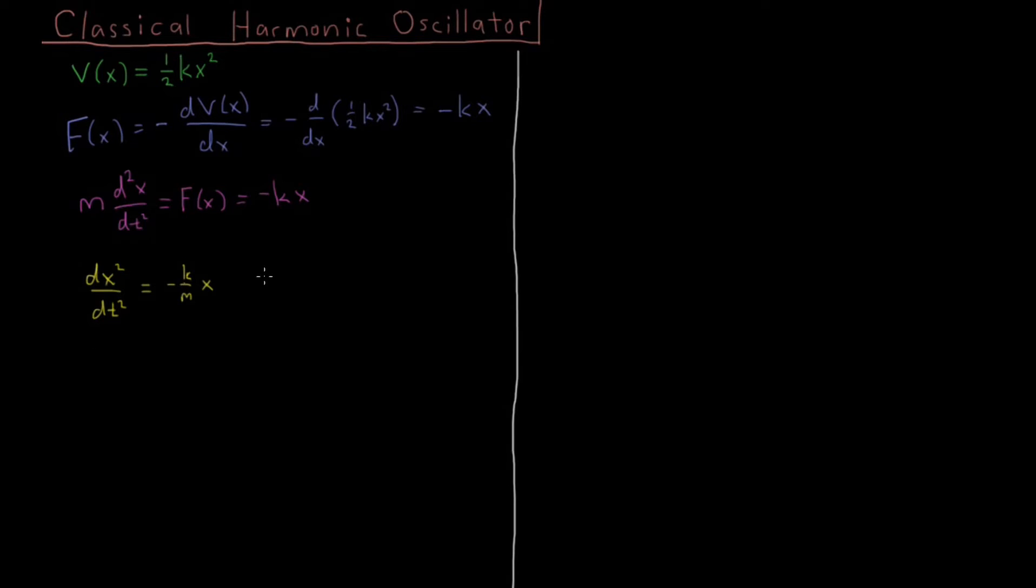...it's a good idea to guess as your solution that x of t is a sum of A cosine omega t plus some constant B times a sine term, also depending on omega t. Note that this parameter omega is just the square root of k over m.